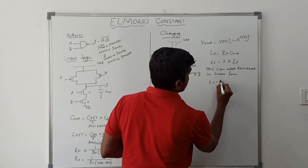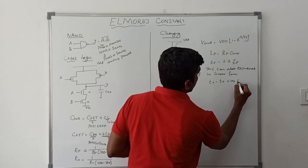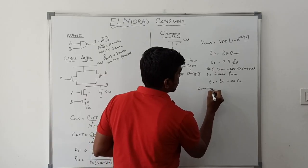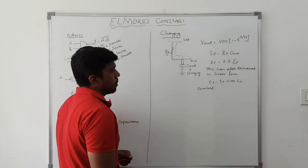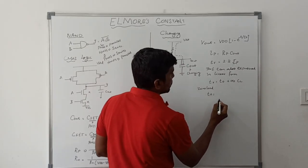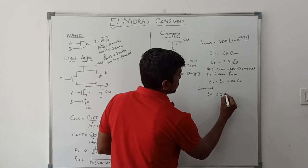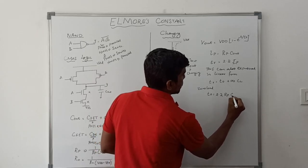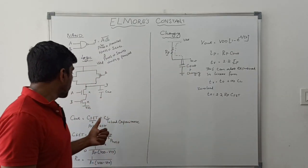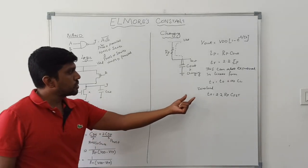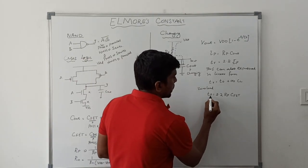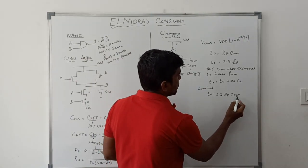The rise time can be expressed in linear form as: Tr = T0 + α0 × CL. At zero load condition (CL = 0), T0 = 2.2 × RP × Cfit, because Cout = Cfit + CL, and ignoring CL gives T0 = 2.2 × RP × Cfit.